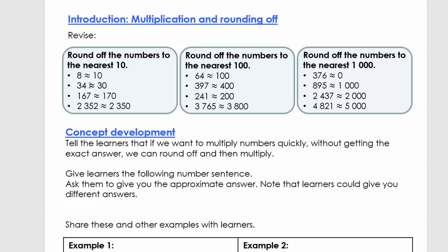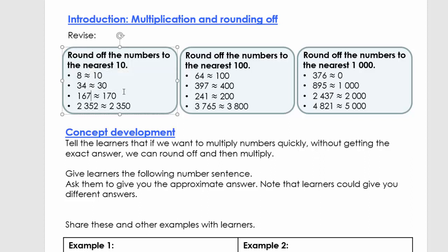When we look at 34, we ask: between which two 10s is 34? It's between 30 and 40. Since the unit is a 4, we go to the lower 10 — that is 30. For 167, we only look at 67 because we're rounding to the nearest 10. 67 is between 60 and 70, and since it ends on a 7, we move to the higher 10 — so we go to 170.